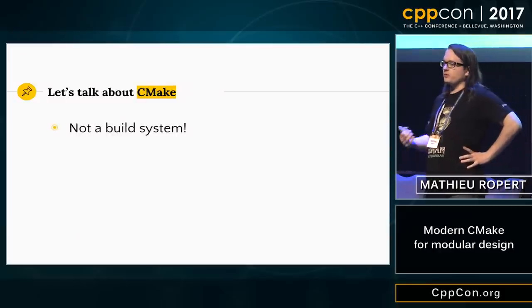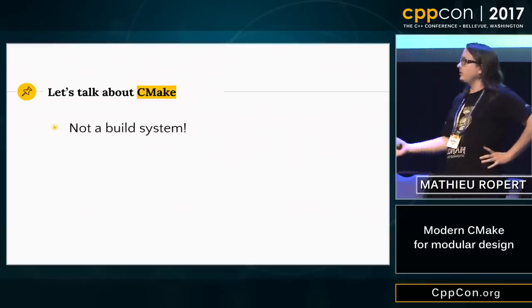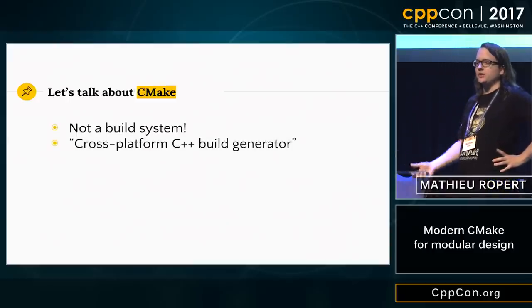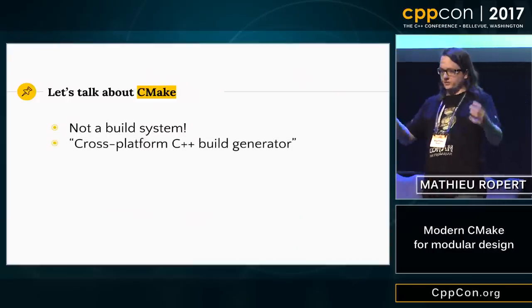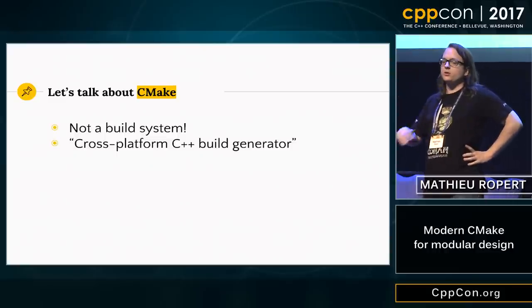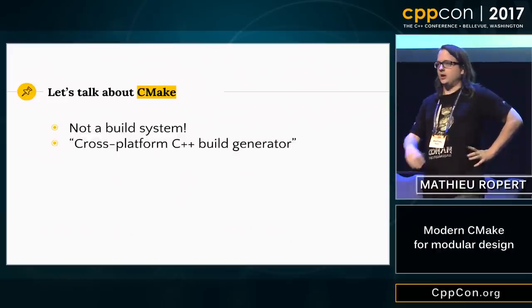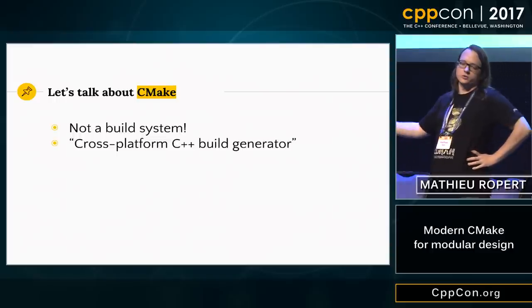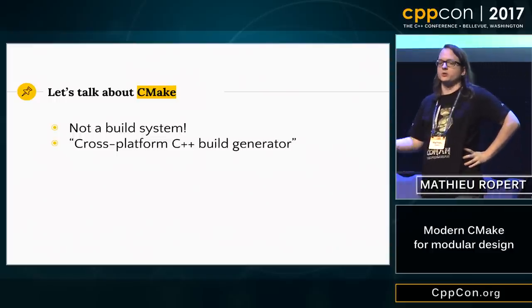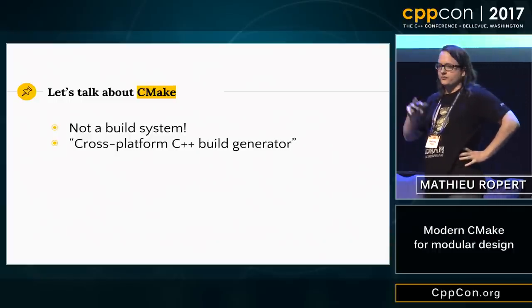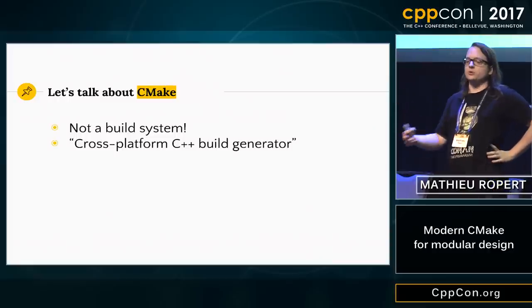The first thing that most people think is that CMake is a build system. It's not. Technically speaking, it's a build system generator. You tell it that you want to build a project, and all it does is generate the build file for somebody else — Make, Ninja on Unix, Visual Studio or something else on Windows. It just does that. It does not build by itself. It's just a meta-description for the generator you use.